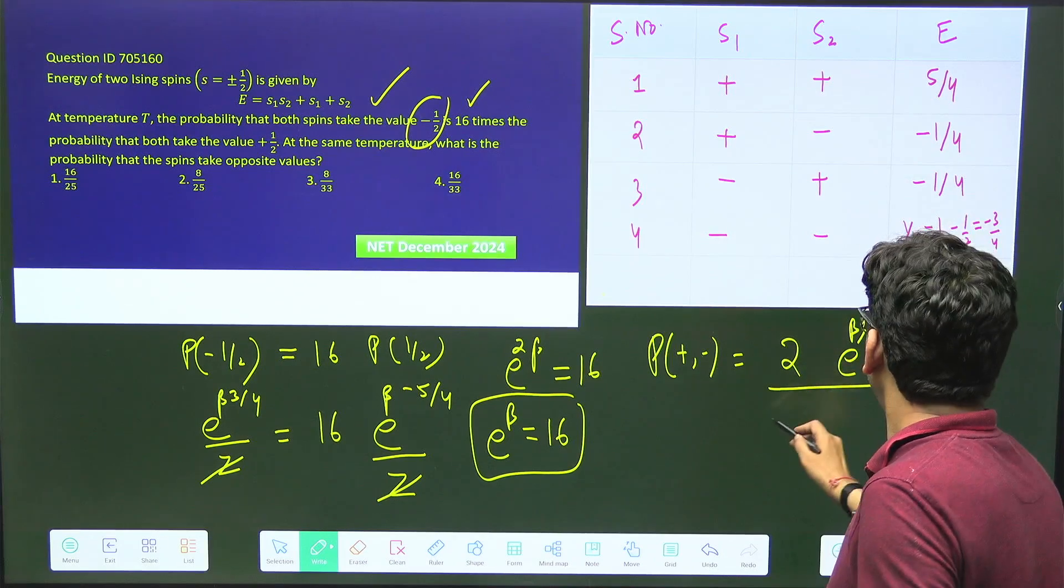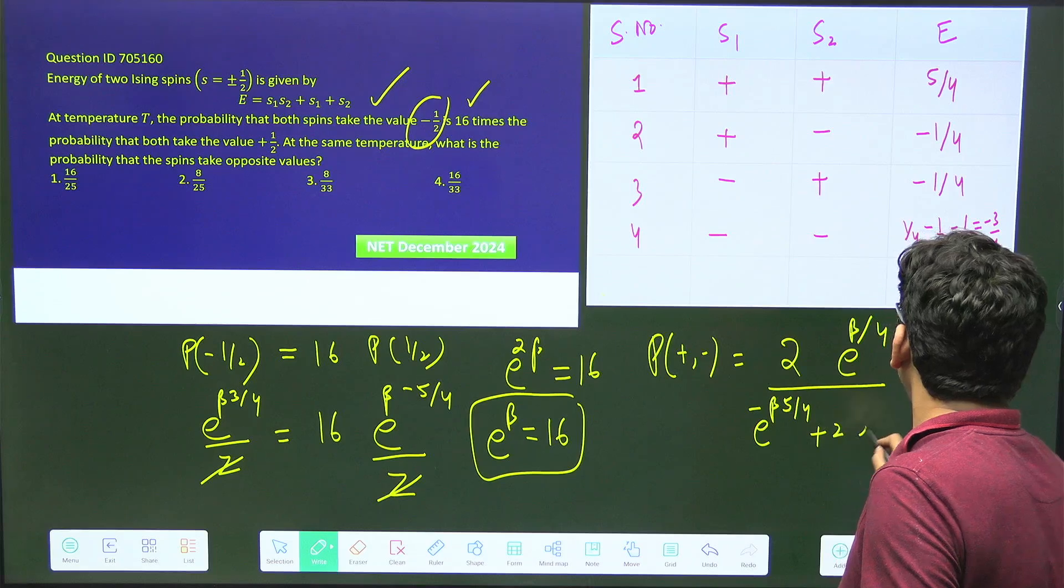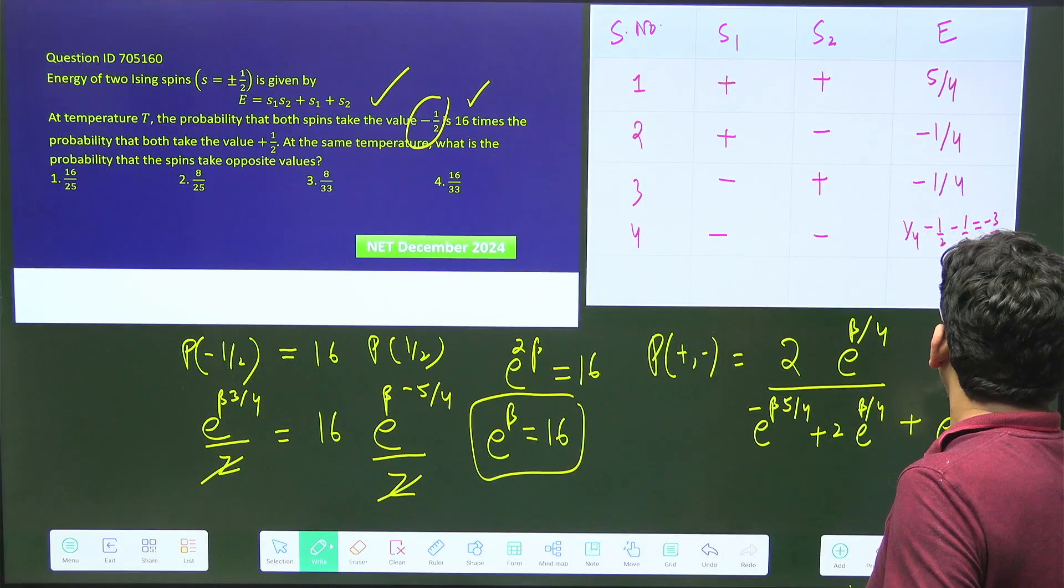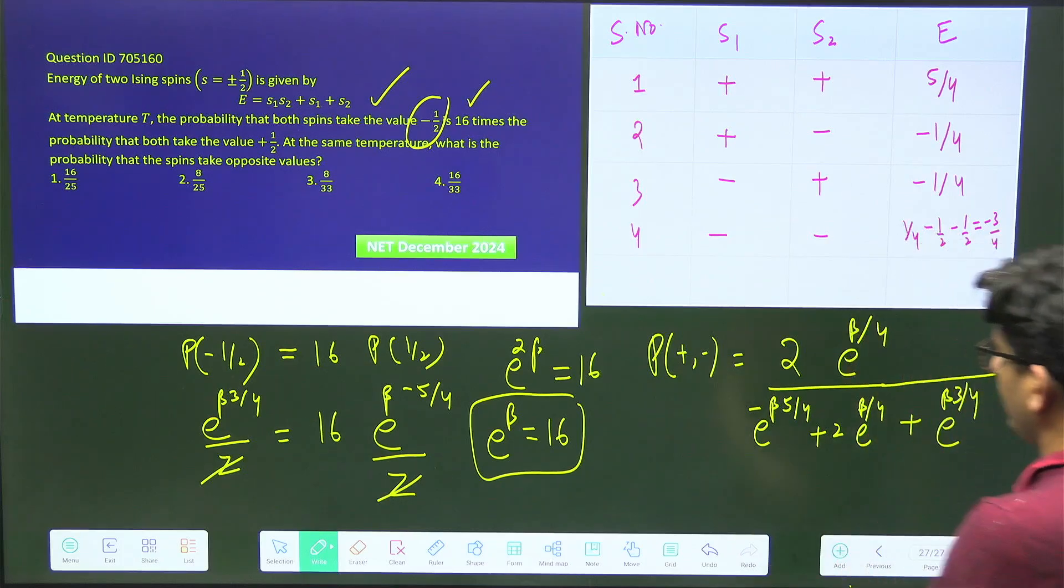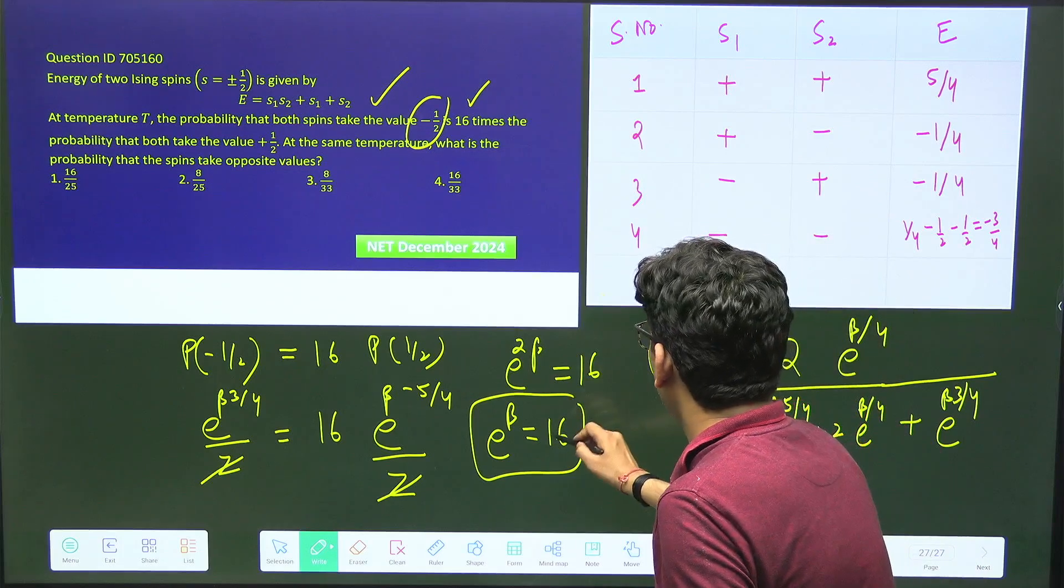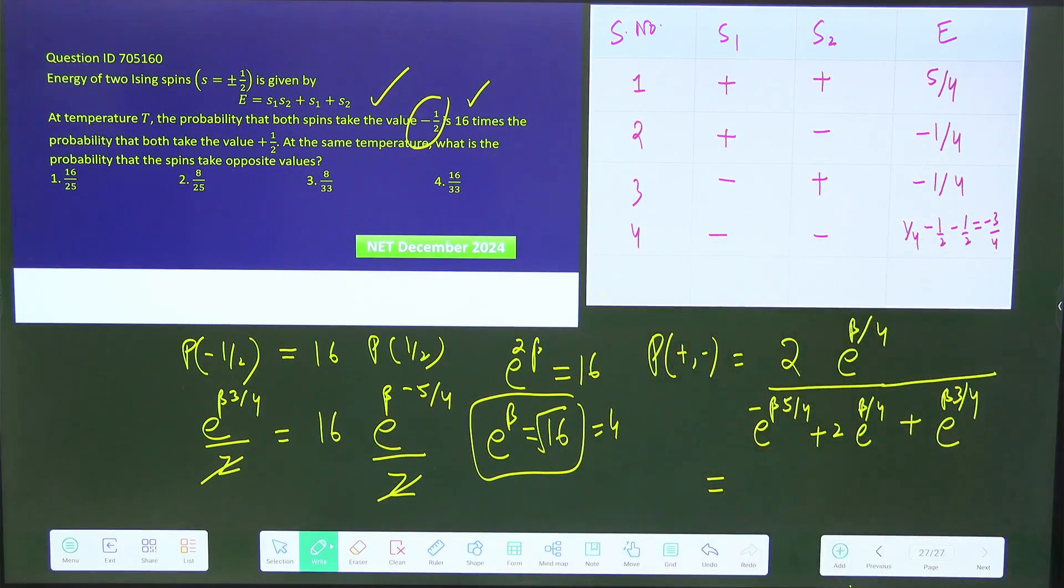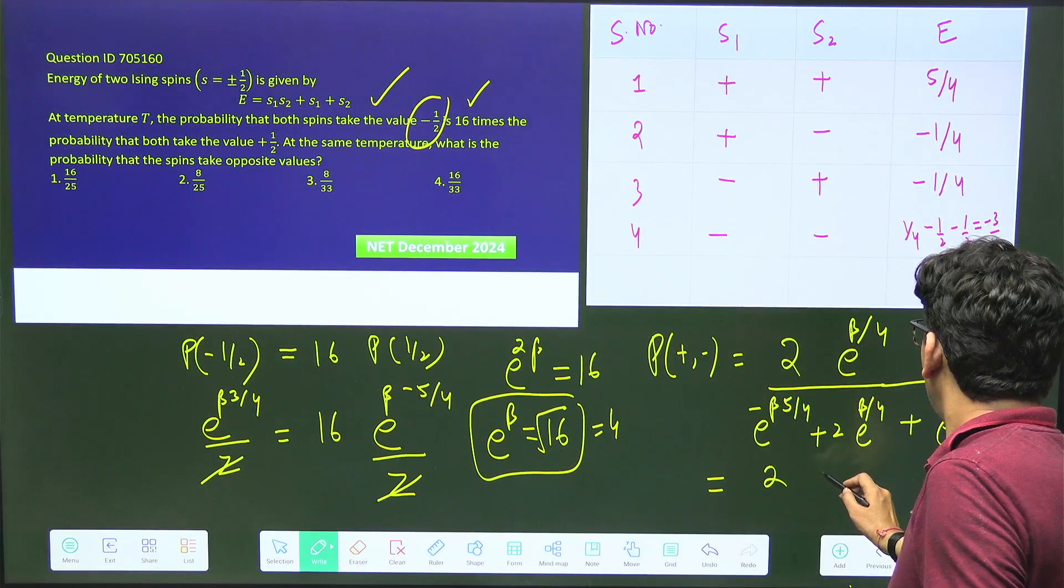I will use beta - no need to go to temperature because beta is just 1 by k_b T, representing the temperature. Now if I want to get the probability of plus or minus, both will be taken together: 2 times e to the power beta by 4 over Z. What will be Z? e to the power minus beta 5 by 4 plus 2 times e to the power beta by 4 plus e to the power beta 3 by 4.